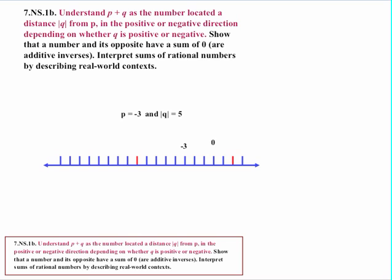Let's try another example. Our starting point for p is negative 3, and the distance we want to travel from that point is 5. Starting at negative 3 and going 5 in the positive direction puts us at positive 2. But if the distance of 5 is in the opposite direction — starting at negative 3 and going left — that puts us at negative 8.